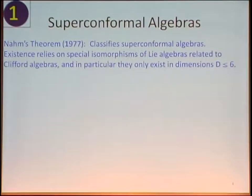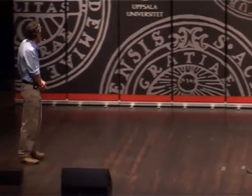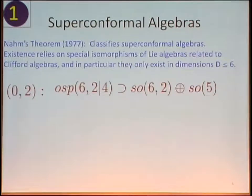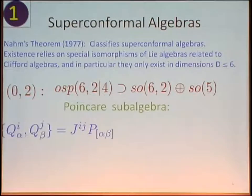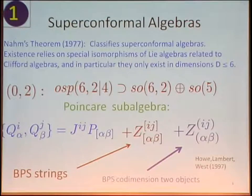Our story begins in 1977 with Nahm's theorem, which classifies superconformal algebras. The existence of these relies on special isomorphisms of Lie algebras, and they only exist in dimensions up to six. These are called the (0,K) algebras, and the even subalgebra is the conformal algebra, and this is the R-symmetry. In this talk, K is firmly going to be equal to 2. So the R-symmetry is USp(4)≅Sp(5). The Poincaré subalgebra is standard, and then we can have central terms related to the existence of BPS strings, and also central terms related to the existence of BPS co-dimension two objects, which will play a very important role later in the talk.